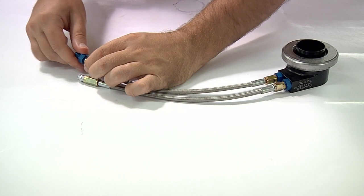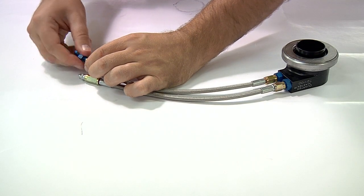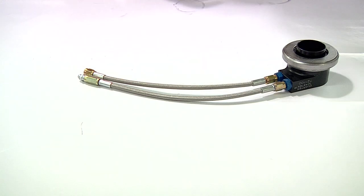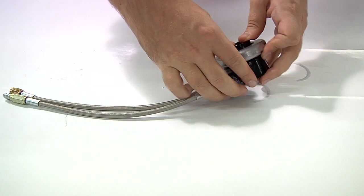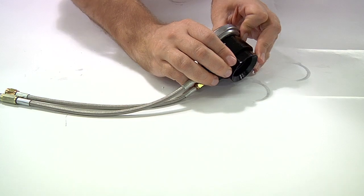To take apart your hydraulic street release bearing, first remove the AN fitting and push the piston in and out to remove brake fluid. Remove the piston by pressing it out by hand.